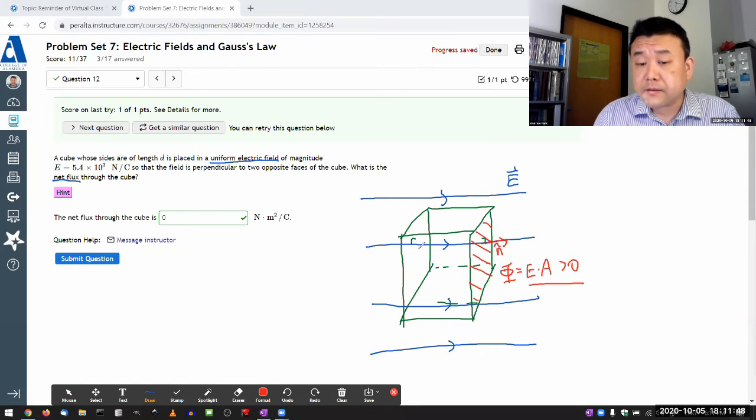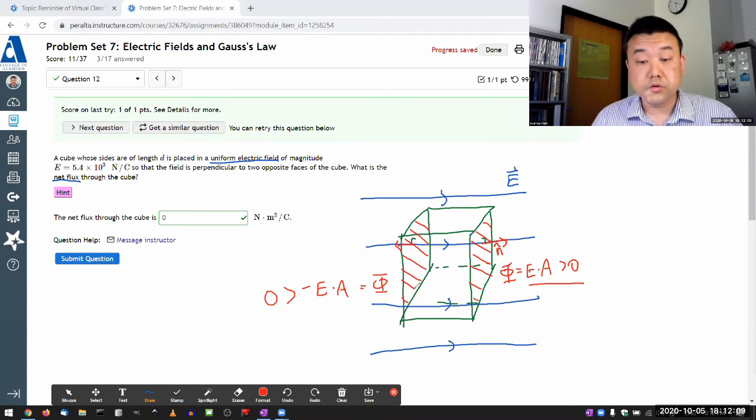Now, the same convention means that for this surface here, the surface normal points to the left. So when you calculate the flux through this area, that's going to be minus electric field times A. This will be less than zero. So you can see with these two surfaces that those two contributions to the net flux will cancel out. So these two combined will give zero total electric flux.